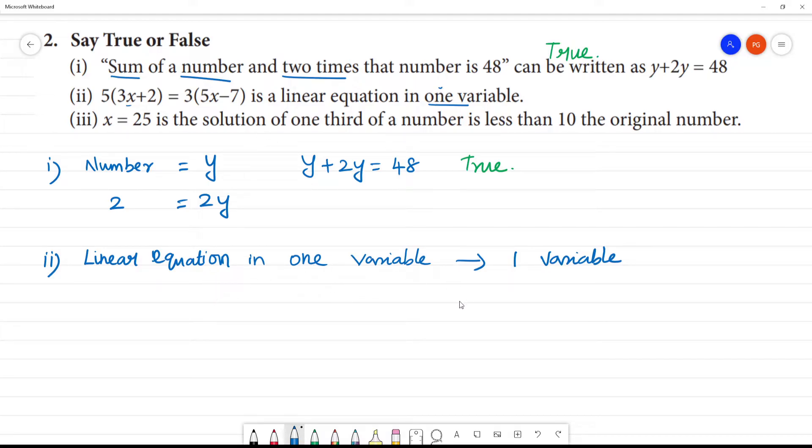Now, what is a linear equation? The power of the variable should be 1. Clear? x to the power 1. That is a linear equation. The exponent or the degree should be 1.